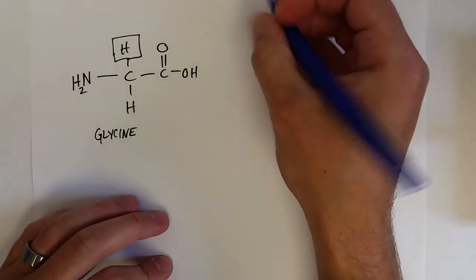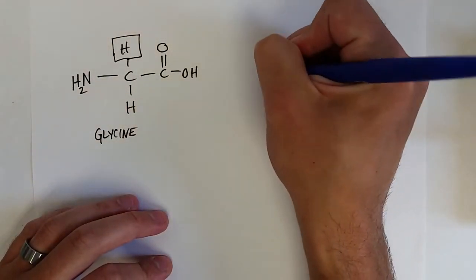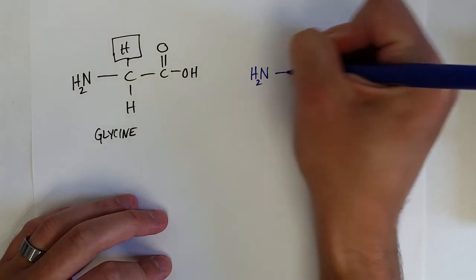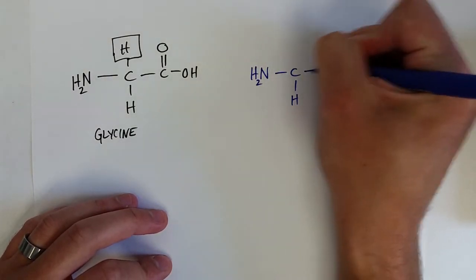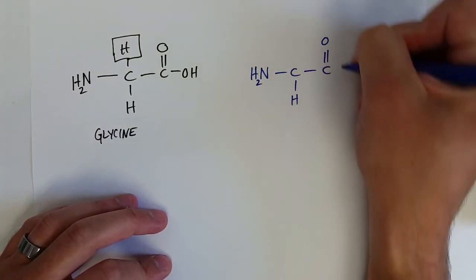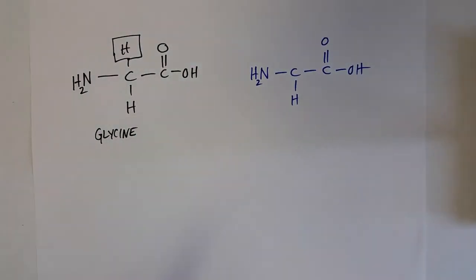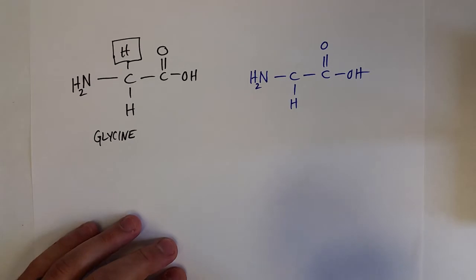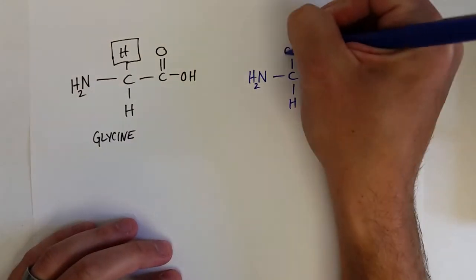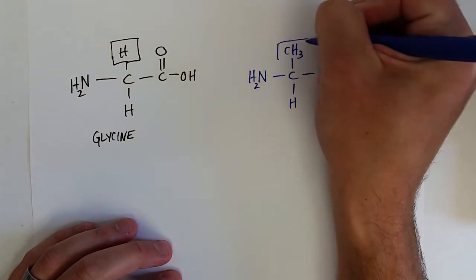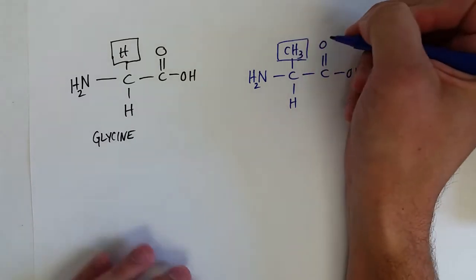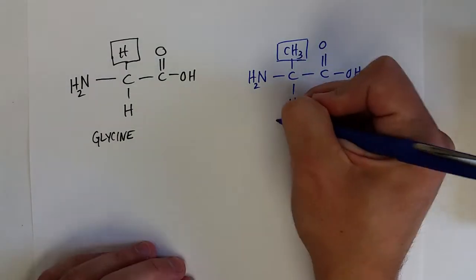Another amino acid could have something different bonded to that carbon in the middle. And if that is instead of a hydrogen atom, it is a methyl group. So the methyl group is the R group for this amino acid that makes this alanine.